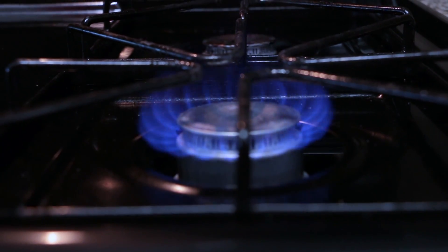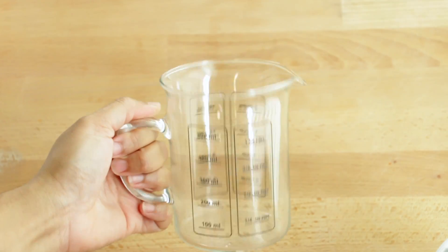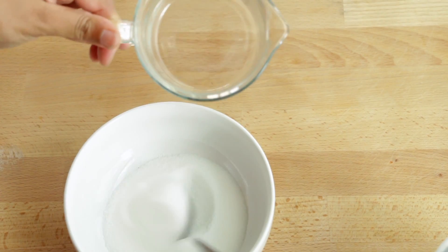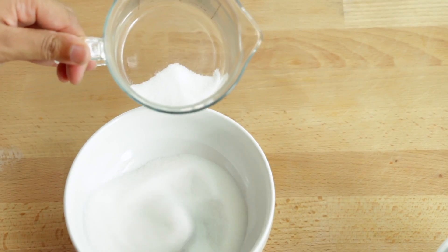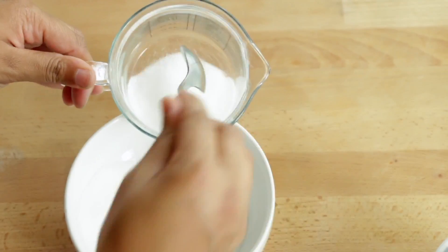I turn my stove on a high heat and place my moka pot there to begin the brewing process. Then I take a measuring cup and I place four tablespoons of sugar into it. I do four because I like my espresso to be more on the sweet side.